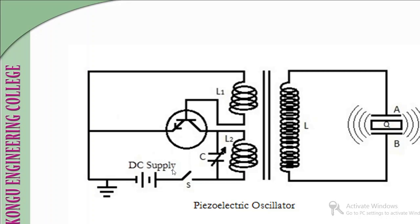The parallel combination of a variable capacitor and inductor L2 forms a tank circuit. When the DC supply is switched on and the circuit is closed, this tank circuit will start oscillating—an alternating current will flow in the tank circuit. Due to this alternating current, an alternating EMF will be induced in coil L, which is fed to the metal plates between which the piezoelectric crystal is placed. According to the inverse piezoelectric effect, the crystal will start producing mechanical vibrations, and if their frequency exceeds 20,000 Hz, ultrasonic waves are produced.